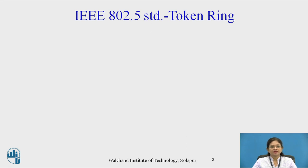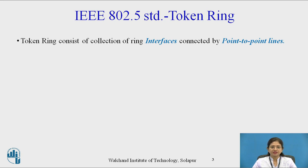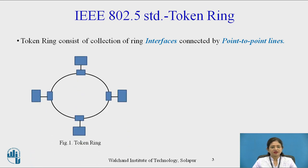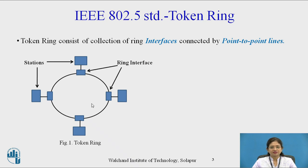Now let's see token ring in detail. Token ring consists of a collection of ring interfaces connected by point-to-point links. Point-to-point link means the interface of one station is connected to the interfaces of the two other stations on its right and left. This diagram shows four stations connected in a ring topology. These are the stations, these are the ring interfaces, and this is the direction of the token — moving around the ring in clockwise or anticlockwise direction.